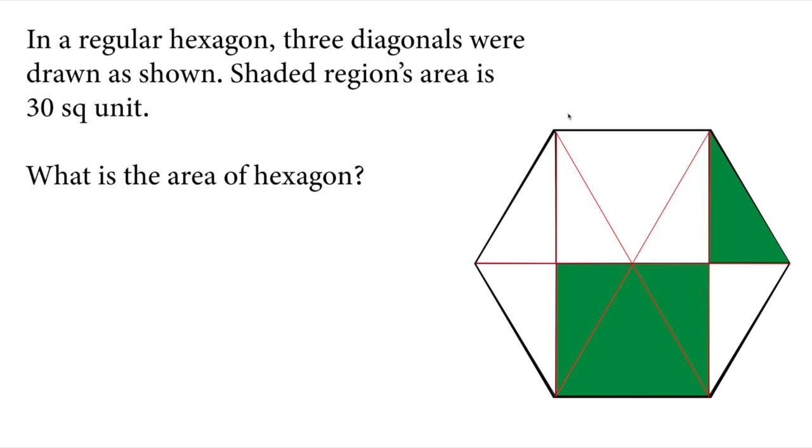As we can see, the diagonals divide our hexagon to six triangles. Also some of them are divided into two right triangles. Such as this triangle right here. So we have two of them nested next to each other.